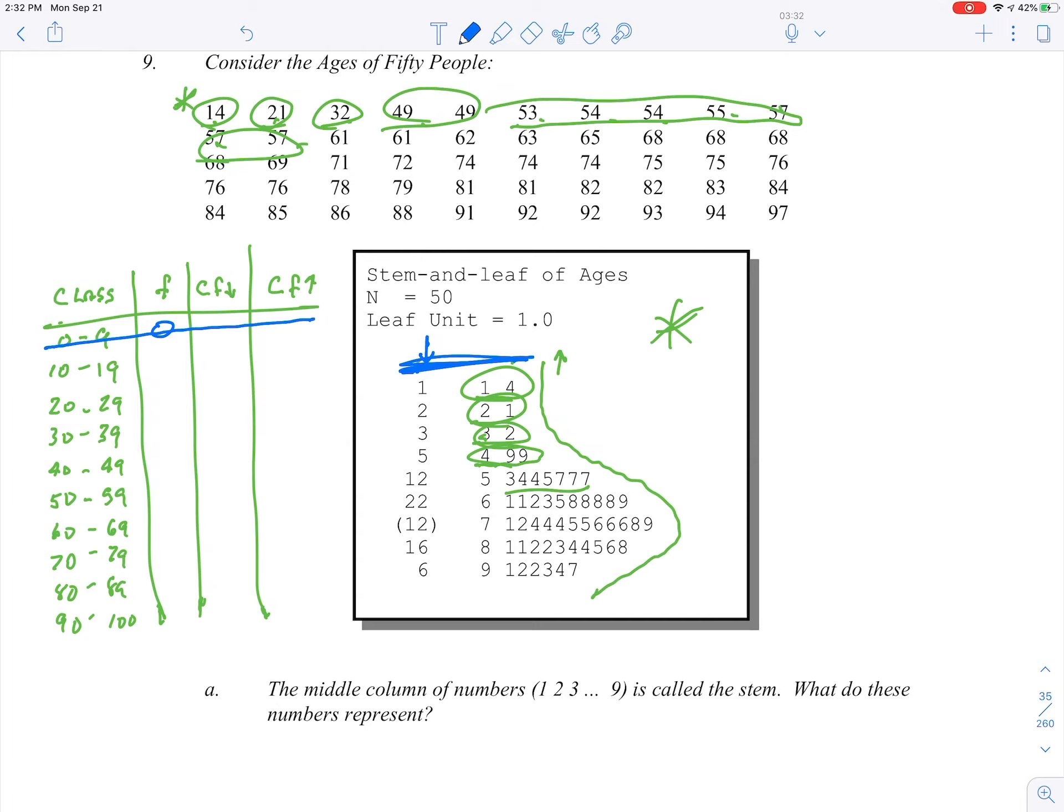Then we've got a frequency of 1, 1 for the 14, a 21, a 32, 2 for the 49s. There's 7 for the 50s, there's 10 for the 60s, there's 12 for the 70s, there's 10 for the 80s, and there's 6 for the 90s, and that sums up to 50.